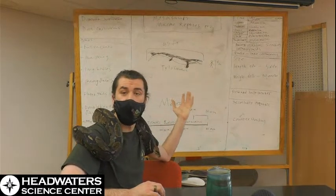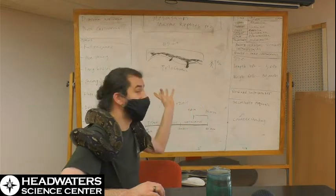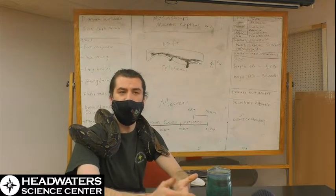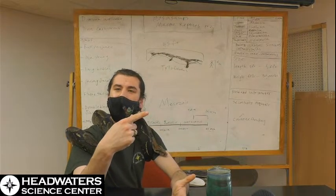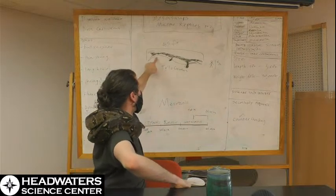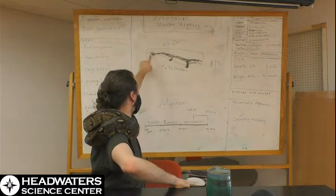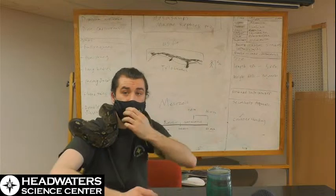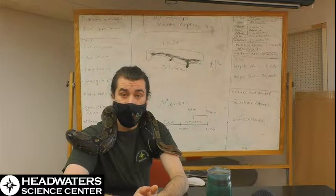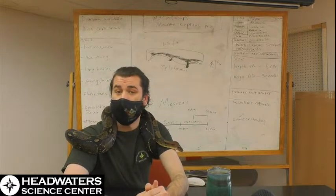Recently there was a great skin impression of a mosasaurus, specifically the tail, where they were able to see this fluke coming off the top of the tail, kind of like if you flipped a shark's tail upside down, where the actual tail itself bent down and the fluke protruded off of it. This means these animals probably had a more efficient way of swimming than we once thought - they could be quite fast in the water.